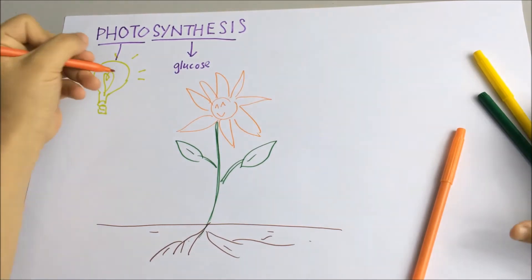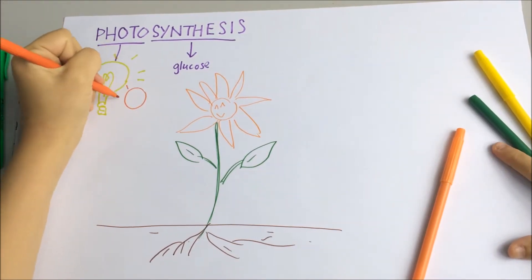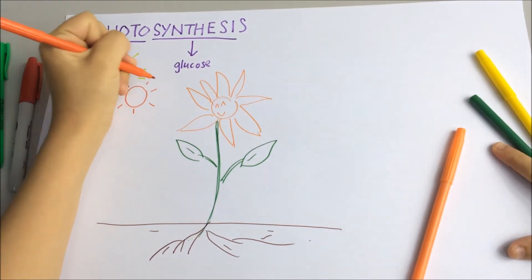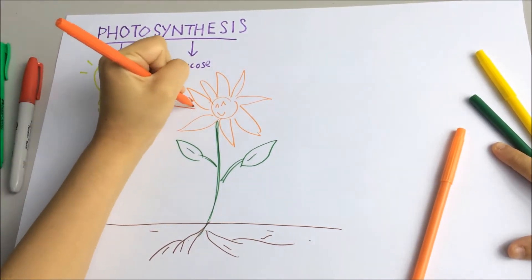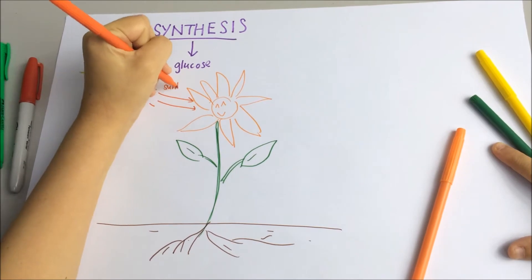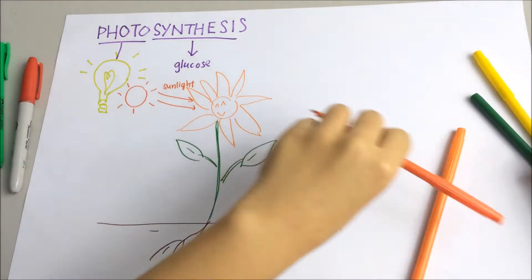During this reaction, light energy from the sun will be absorbed by the green substance in the leaf called chlorophyll. And this energy will be used to produce food molecules.